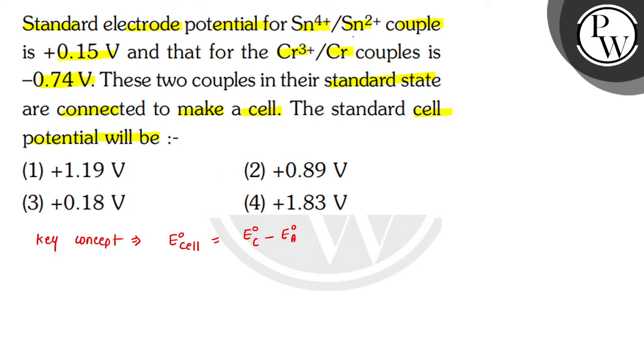Here it is given that Sn⁴⁺ to Sn²⁺ equals 0.15 V. This reaction can be written as Sn⁴⁺ plus 2 electrons will convert into Sn²⁺. Here plus 4 is converting into plus 2, that means reduction is taking place.